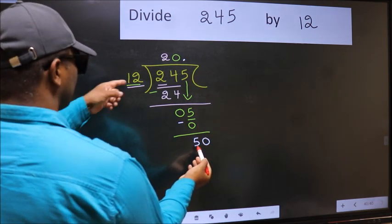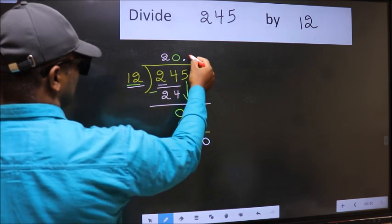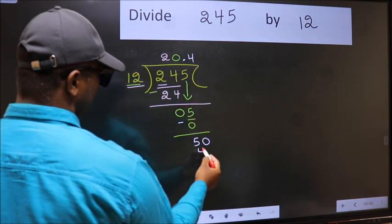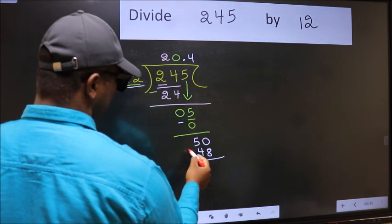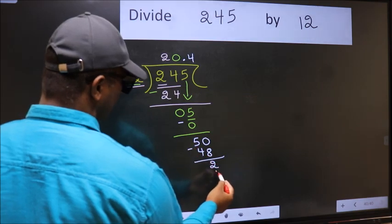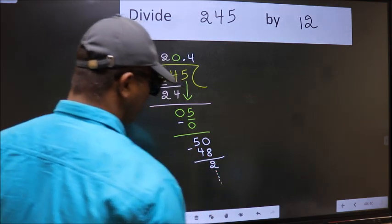A number close to 50 in 12 table is 12 fours 48. Now you should subtract. You get 2 and continue the division. I am not doing that.